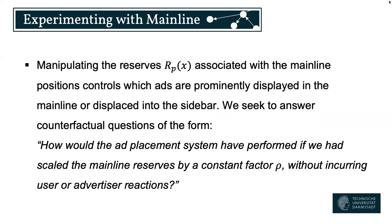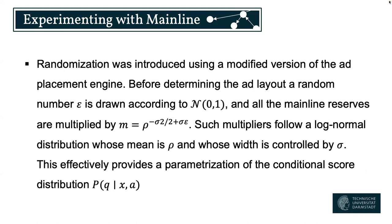What we want to do is experiment with the mainline. Manipulating the reserves r_px associated with the mainline positions controls which ads are prominently displayed in the mainline or displaced into the sidebar. We want to answer a counterfactual query: how would the ad placement system have performed if we had scaled the mainline reserves by constant factor rho, without incurring user or advertiser reactions? This is a classical counterfactual question involving keeping all exogenous terms constant while intervening on certain parts of interest.